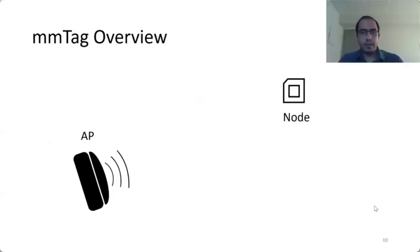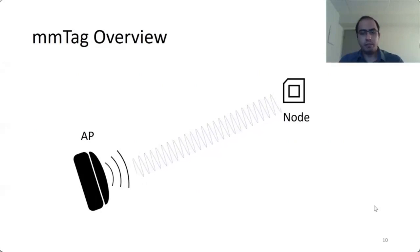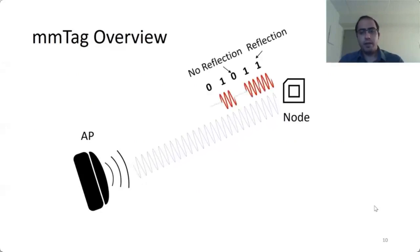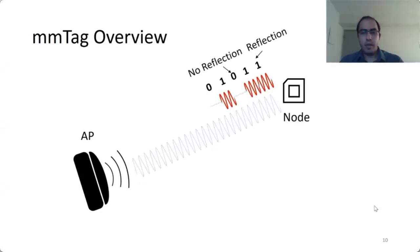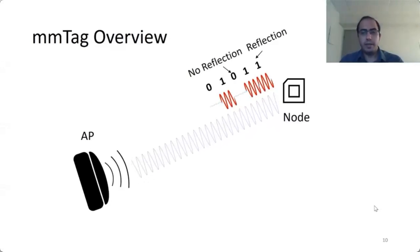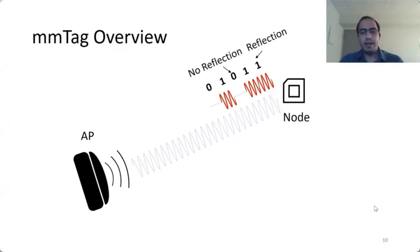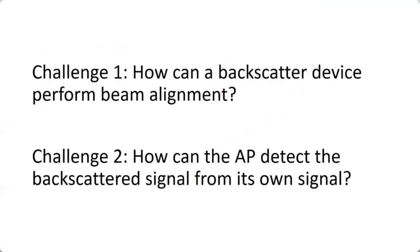The mm-Tag consists of an access point and a node. The access point sends a sine wave at millimeter wave toward the node, and the node either absorbs this signal or reflects it back toward the access point. By receiving the reflected signals, the access point can detect the zero and one symbols sent by the node. As a result, the node piggybacks data over the signal sent by the access point. This paper addresses two main challenges: beam alignment and self-interference detection.